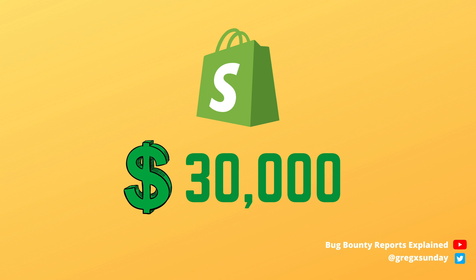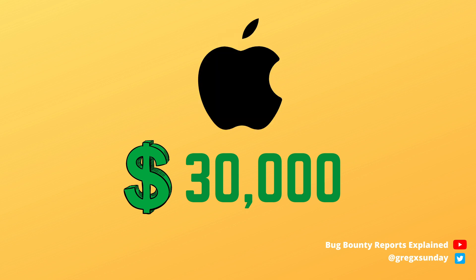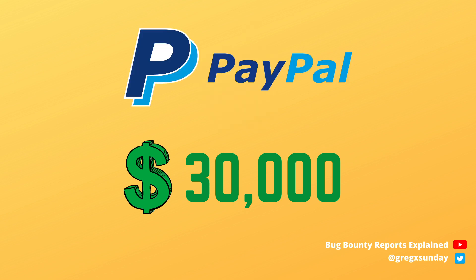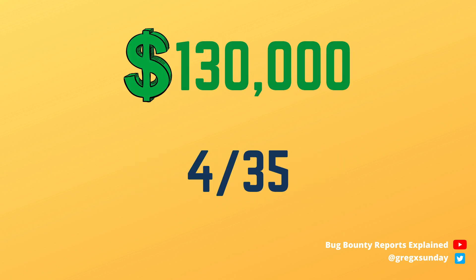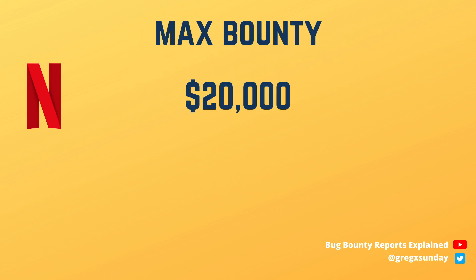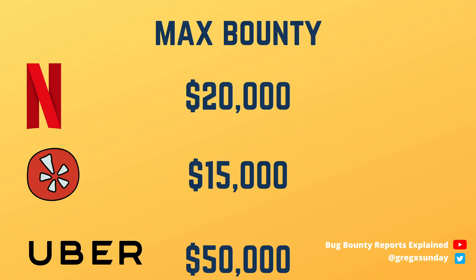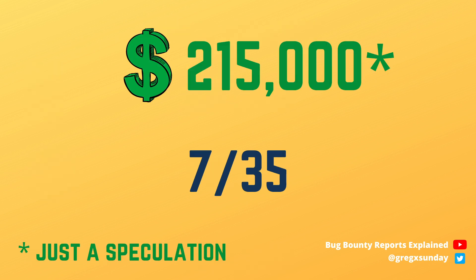For example, Shopify was compromised via a Shopify Cloud Library and paid $30,000. Another $30,000 came from Apple, and yet another from PayPal. The biggest reward, however, came from Azure, which paid $40,000. In total that's $130,000 and it's only 4 out of 35 companies. The author also mentioned that he pwned Netflix, Yelp, and Uber — if they would also pay their respective maximums, we would have another $85,000, for a total of $215,000 for just 7 out of 35 companies.